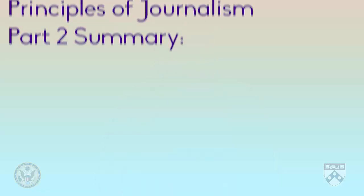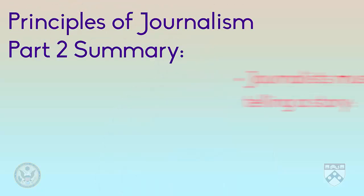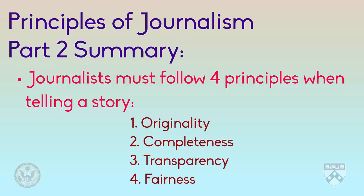A journalist should inform, not try to shape the way people think about something. So, to summarize, in this video we looked at the principles of originality — using your own words; completeness — writing the whole story; transparency — making your process clear to the reader; and finally, fairness — writing accurately without bias.